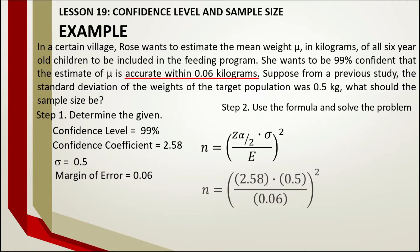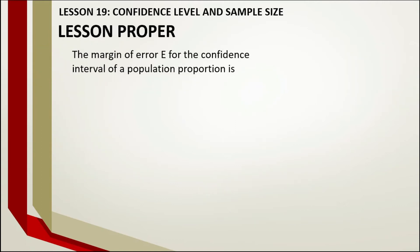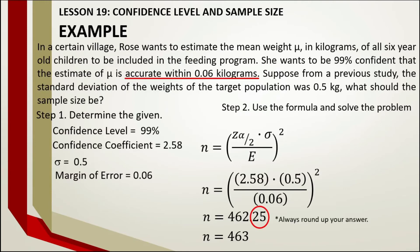Computing the expression, the answer is 462.25. Since there is a decimal, we round up: 462 plus 1 equals 463. Therefore, Rose needs a sample size of 463 children.